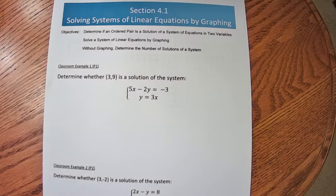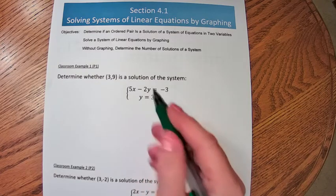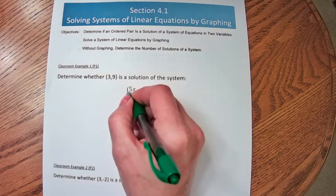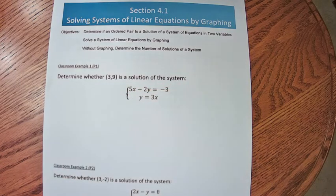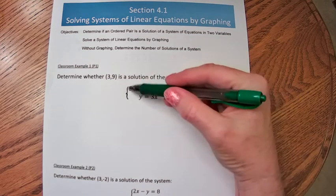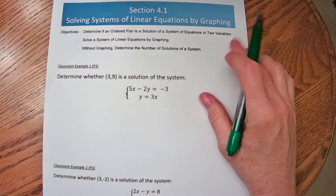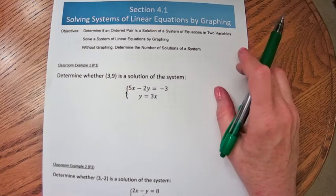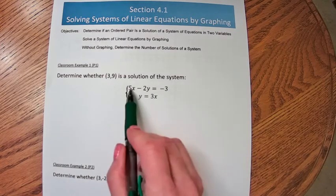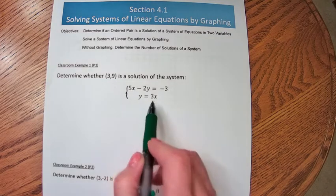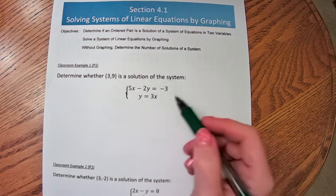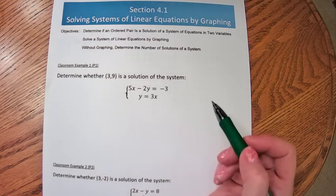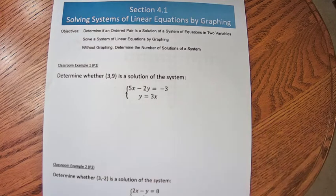First of all, determining whether an ordered pair is a solution to a system. This is a system of linear equations. A system is a collection of two or more equations taken together that have a solution. You see this curly bracket — this set bracket here — meaning I have one equation and a second equation. We are looking for a value for x and a value for y that make both equations true at the same time.